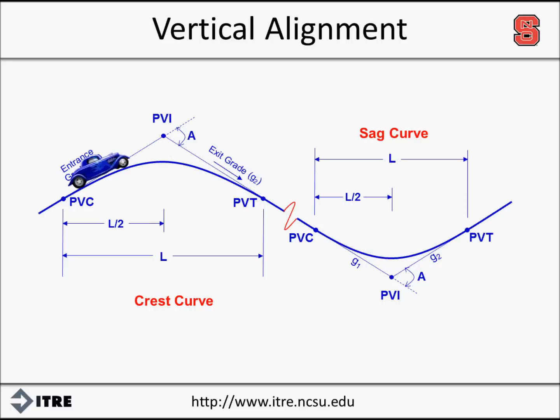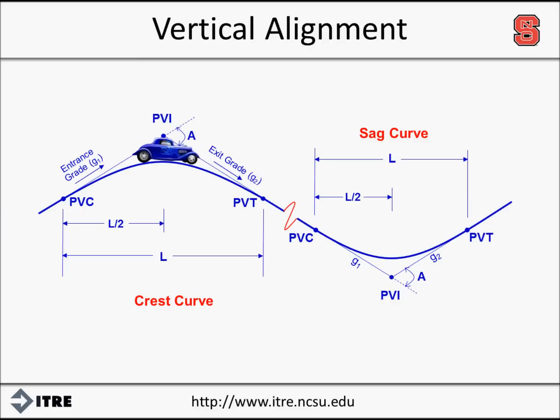A vertical curve is depicted in a diagram such as this, a section through the center line of the roadway. The typical vertical curve is a symmetric parabolic curve whose shape is defined by the parabolic equation. The PVI is the point of vertical intersection and is the point where the two tangents meet. The PVC is the point of vertical curvature and is the point at which the curve begins. And the PVT is the point of vertical tangency and is the point at which the curve ends.